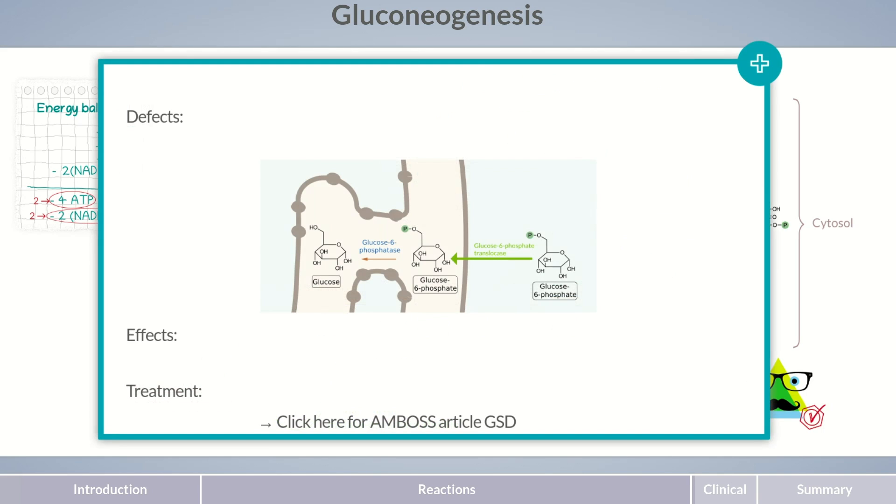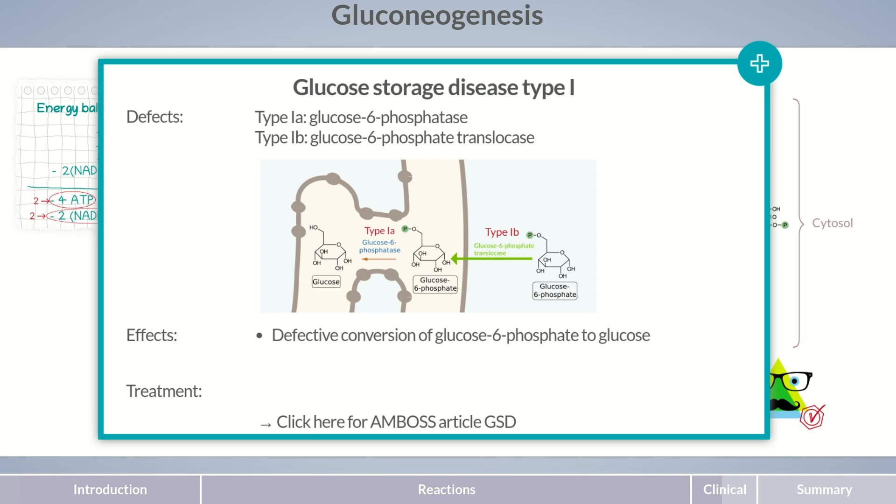A metabolic disease associated with gluconeogenesis is glycogen storage disease type 1, also known as von Gierke disease, which belongs to the glycogenoses. Type 1a is due to a defect of glucose 6-phosphatase, whereas type 1b concerns glucose 6-phosphate translocase. Both cases result in a defective conversion of glucose 6-phosphate into glucose.